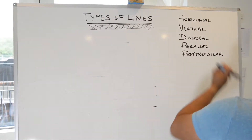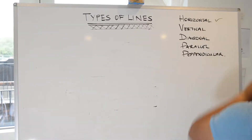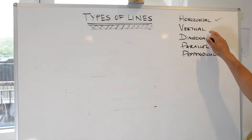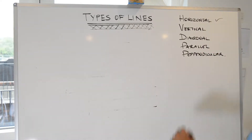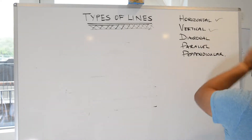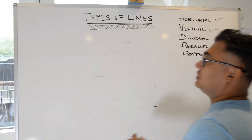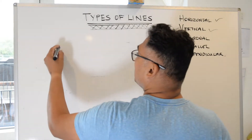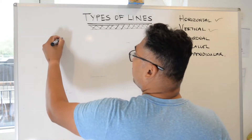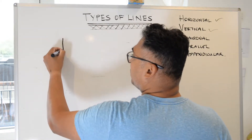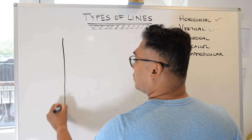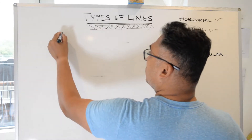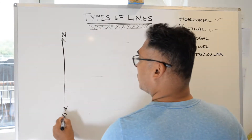So we've done horizontal. The next type of line is vertical lines. Vertical lines are the opposite — basically they run from north to south.